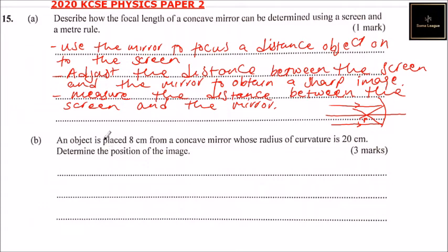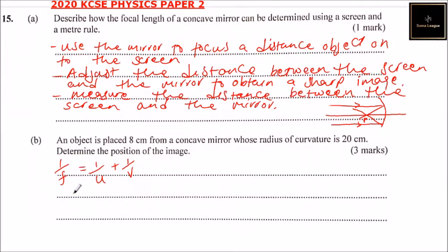An object is placed 8 cm from a concave mirror whose radius of curvature is 20 cm. Determine the position of the image. We use the formula: 1 over focal length equals 1 over the object distance plus 1 over the image distance. Rearranging, we take 1 over u to the other side, so 1 over v equals 1 over f minus 1 over u.